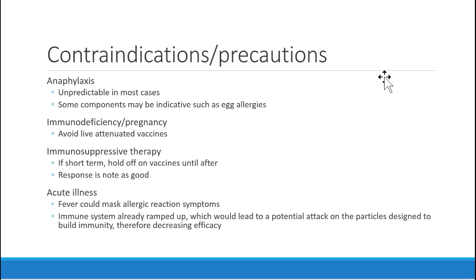What are actual precautions or contraindications against vaccines? There are only a few. Anaphylaxis is one, and it's pretty unpredictable unless you know a patient has a history of it. For example, if you've ever gotten a flu shot, they probably asked about egg allergies, because the flu vaccine contains egg proteins from the production process. If you have a reaction to eggs, you could have a reaction to the vaccine. It's law for any place giving vaccines to have an EpiPen nearby and a protocol in place for if a reaction occurs.